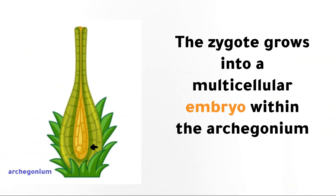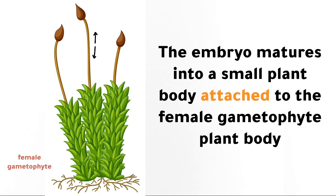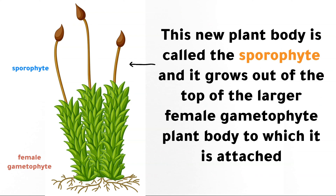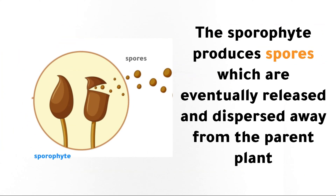The zygote grows into a multicellular embryo within the archegonium. The embryo matures into a small plant body attached to the female gametophyte plant body. This new plant body is called the sporophyte, and it grows out of the top of the larger female gametophyte plant body to which it is attached. The sporophyte produces spores which are eventually released and dispersed away from the parent plant.